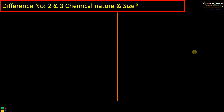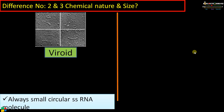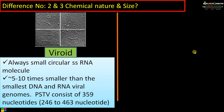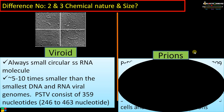Difference number two and three regarding chemical nature and size: viroids are made up of RNA. They are always small circular single-stranded RNA molecules. The size of the genome is five to ten times smaller than the smallest DNA and RNA viral genomes. In the case of PSTV, it consists of 359 nucleotides. Generally, viroid genome size ranges from 246 to 463 nucleotides.